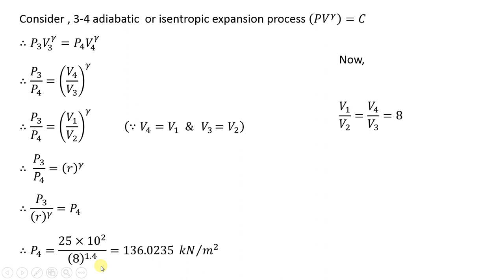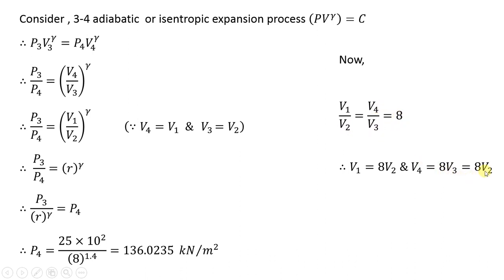Since V1/V2 = V4/V3 = 8, we can express V1 = 8·V2 and V4 = 8·V3. But V3 = V2 because process 2 to 3 is a constant volume heat addition process. So V4 = 8·V2 as well. These volume relationships in terms of V2 will be useful when substituting into the mean effective pressure formula.